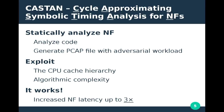CASTEN generates its workloads by exploiting two very important sources of performance variability when running software on commodity hardware: the CPU cache hierarchy, which has variability between L1 hits and DRAM accesses, and algorithm complexity, where certain packets can have longer instruction paths. In the end, it actually works — for one particular network function, we were able to increase latency by 3x.